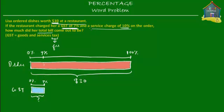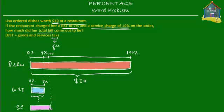An additional charge the restaurant charges is the service charge of 10% — that's 10% of $30. So Lisa pays for three things: the cost of the dishes, the GST of 7%, and the 10% service charge. 10% of $30 is somewhere over here, so we extend it down to make another block for the service charge — colored pink — and put a question mark for the dollar amount.